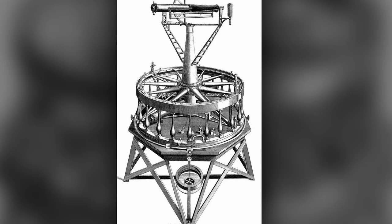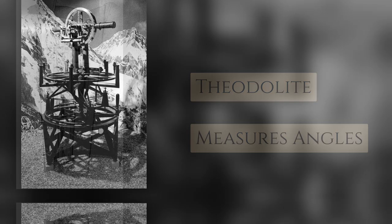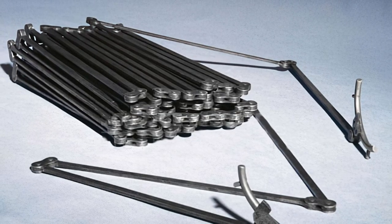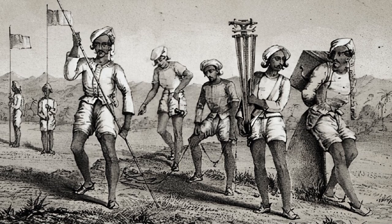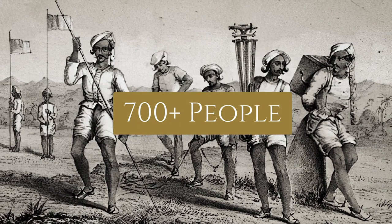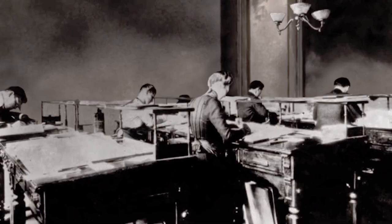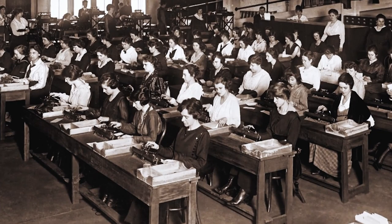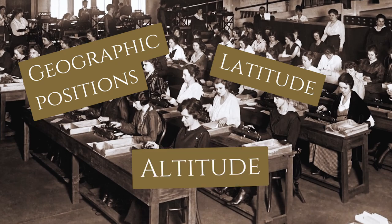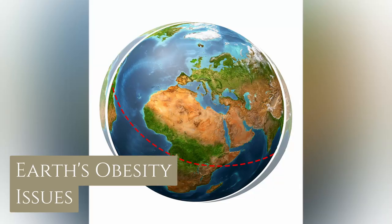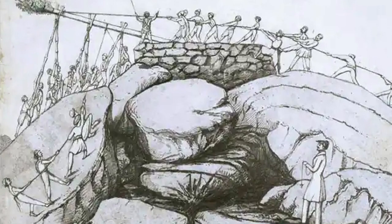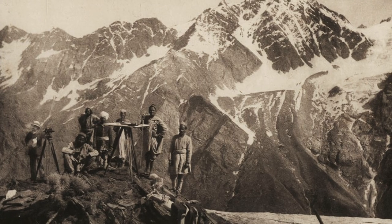To tackle those problems, specialized equipment like giant theodolites, zenith sectors to determine latitude, and of course the chain were used. At times the survey party consisted of 700 people. A team of computers — which at the time meant humans specialized in calculations — were used to figure out positions, latitude, altitude, and applied corrections for all the variances. Soon, and by soon I mean like three or four decades later, the survey reached the Himalayas.